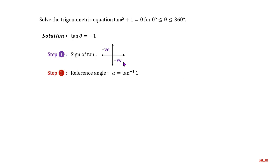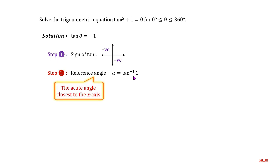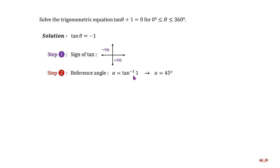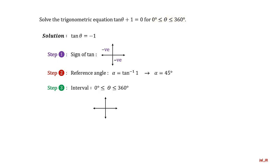Second step: find the reference angle, denoted as α. Alpha equals arctan(1), which is 45 degrees. The reference angle is the acute angle closest to the x-axis, so don't include the negative sign in the inverse trigonometric function. Third step: the interval of solutions is θ from 0 to 360 degrees. We don't change it since we are solving for θ, reading angles counterclockwise in one complete round. The angles are in the second and fourth quadrants with reference angle 45 degrees.